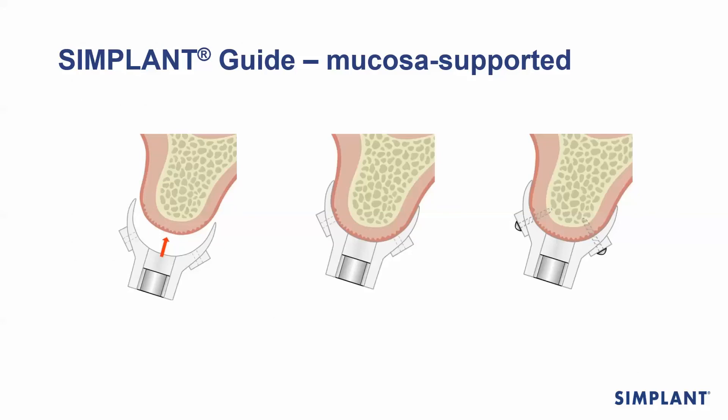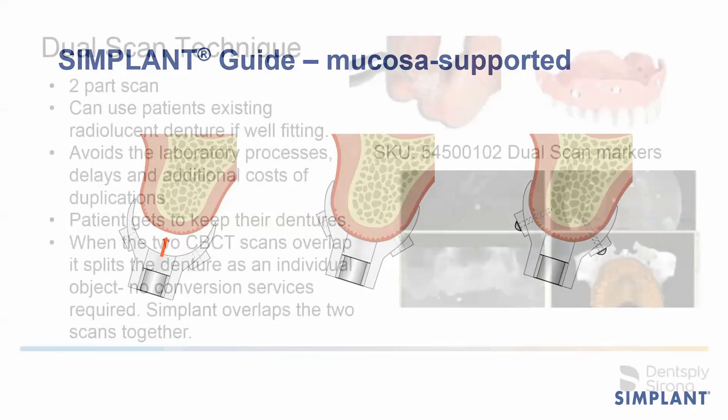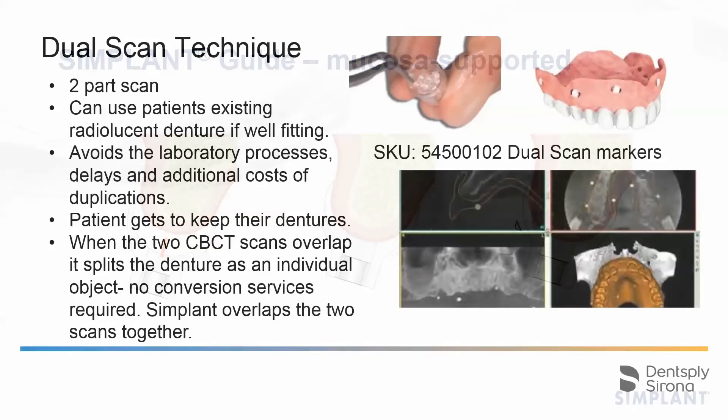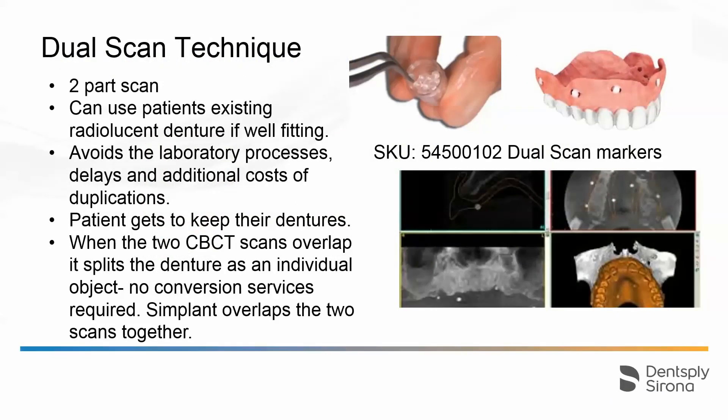For this guide scenario we do need a prosthesis with a base plate that is barium sulfate converted, because the base plate will determine the fitting surface. All it is that we are replicating the denture into a stent. You could use a single scan technique and convert it into barium sulfate completely, including the base plate.